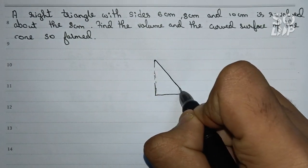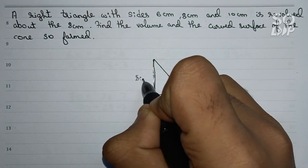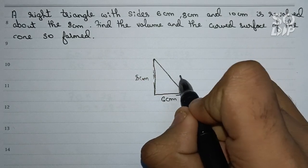So if you draw the triangle it will become something like this - a triangle with 8 centimeter, 6 centimeter, and obviously the longest side will be the hypotenuse.